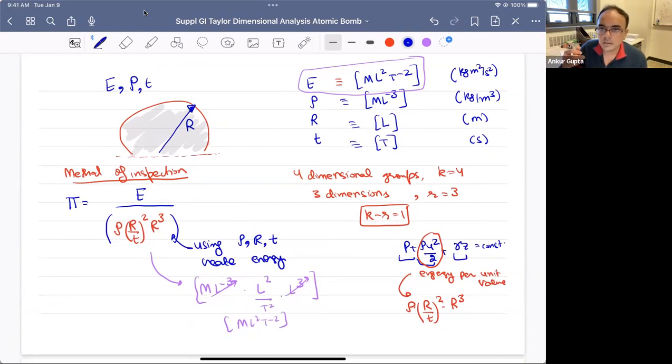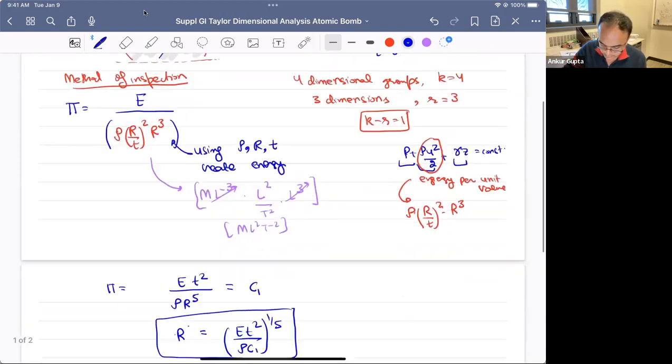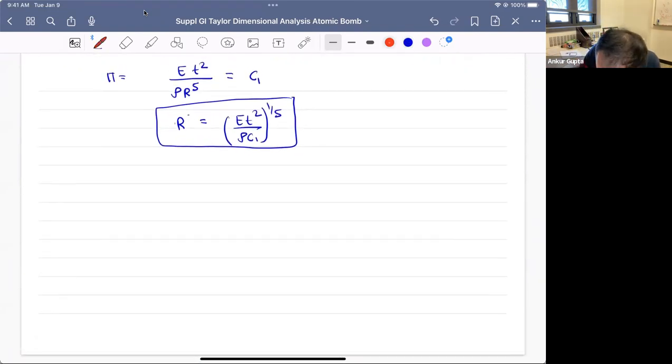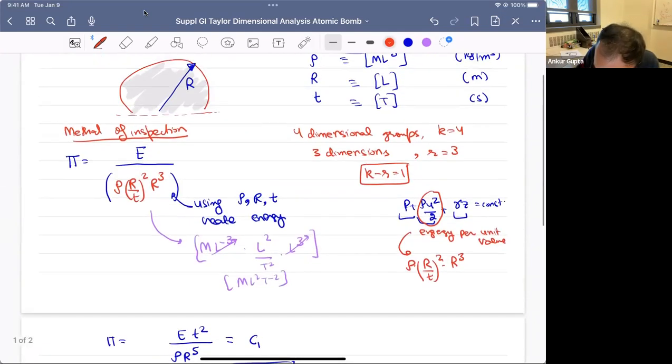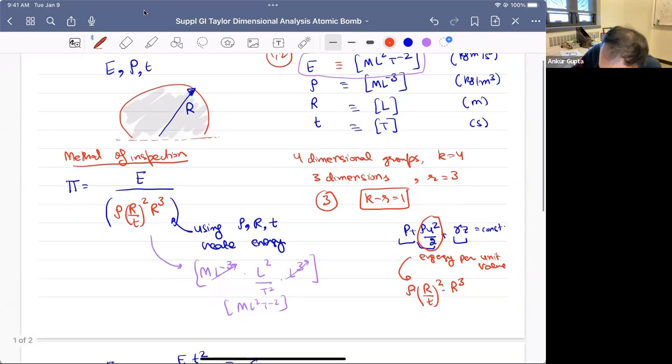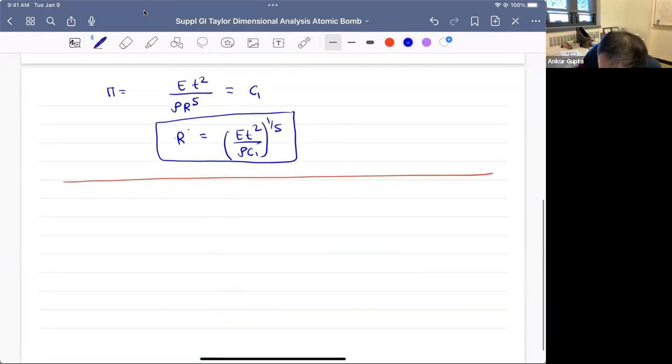So till now, we had four variables: energy, ρ, r, t. We created energy using this method of inspection and gives you an idea of how to get to this point. But now let's use the other method, which is the more formal method with six steps. So we already have the steps one and two. And then we have how many variables we want to find, which is three. Now we want to find the repeating and non-repeating variables. So here it is pretty obvious, because we want to find energy, it is a non-repeating variable.